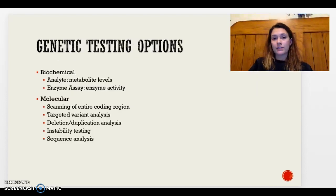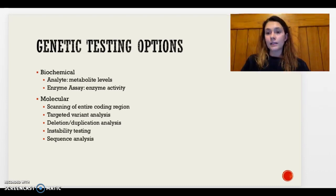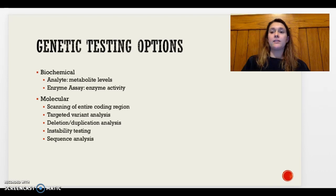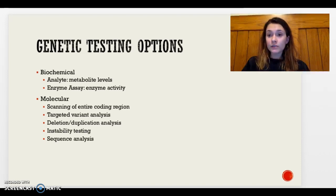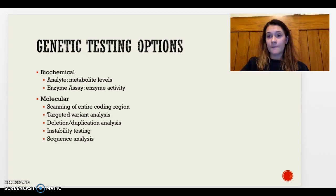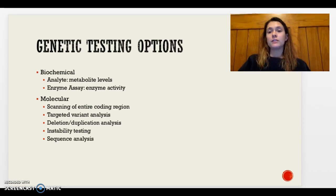Genetic testing options for this disorder can be biochemical or molecular. Biochemical options include an analyte test, which tests for metabolite levels in the body to help diagnose the disorder, and an enzyme assay that tests for Glutaryl-CoA dehydrogenase activity. Molecular tests include scanning of the entire coding region for the GCDH gene, targeted analysis, deletion or duplication testing, or full sequence analysis. There are many options available; these are the most common.